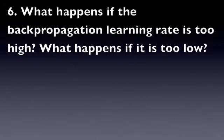Question six deals with the learning rate and backpropagation. If the learning rate is too high, the neural network will become unstable and not learn anything. If it's too low, learning will take a very long time.